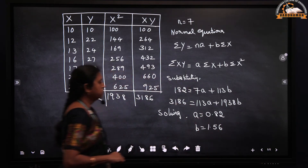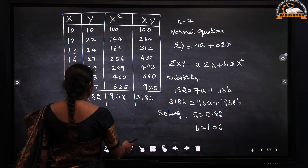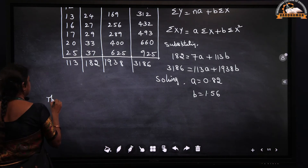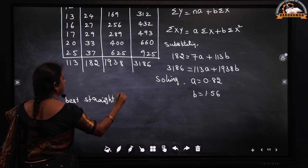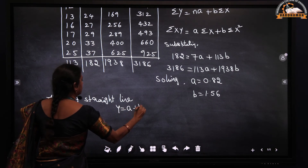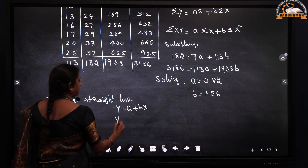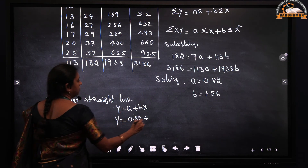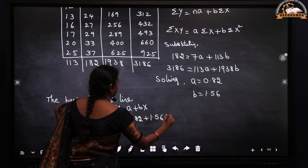So a = 0.82 and b = 1.56. The equation of the best fit straight line for the given data is y = a + bx, which gives y = 0.82 + 1.56x.